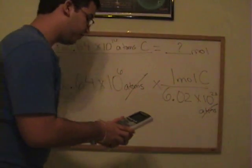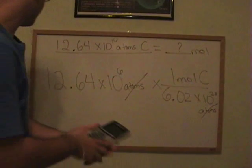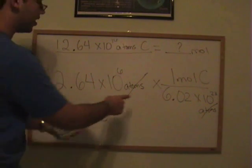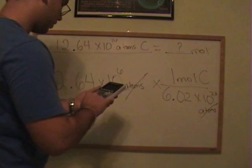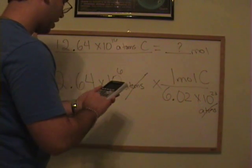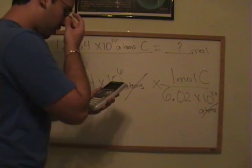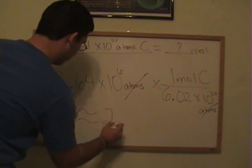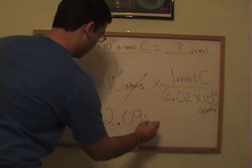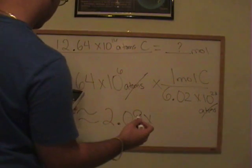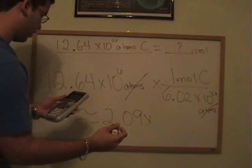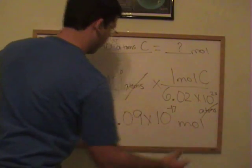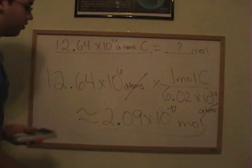And for this, I'm going to need a calculator. So I'm going to grab my calculator, and I'm going to write 12.64 times 10 to the 6th, and I'm going to divide it by 6.02 times 10 raised to the 23rd. Approximately, I'm going to get 2.09 times 10 to the negative 17 moles. So this is the amount of moles that I get.